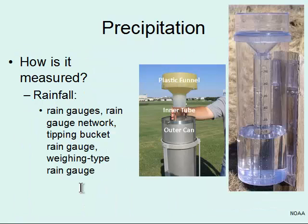So how is precipitation measured? We use things like rain gauges or rain gauge networks, tipping bucket rain gauges, and a weighing type rain gauge. In this photograph, you can see what a regular rain gauge looks like. They have a plastic funnel that filters water down into a plastic tube where you can measure how many inches of rain fell.